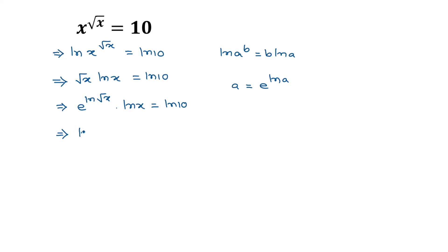we can write ln of x times e to the power of ln of square root of x, which equals x to the power 1 over 2 — that is square root of x — and the right side is ln of 10.